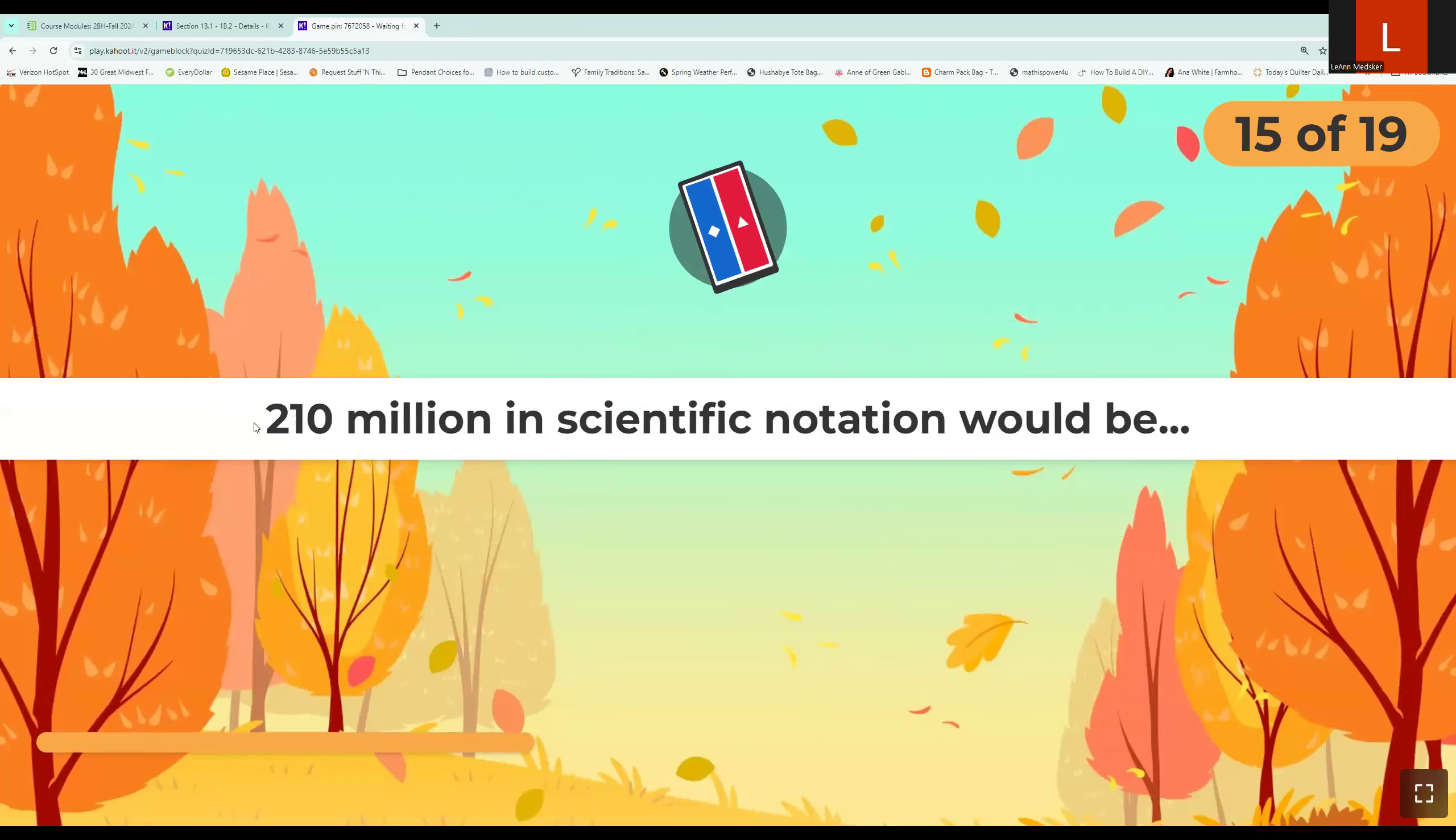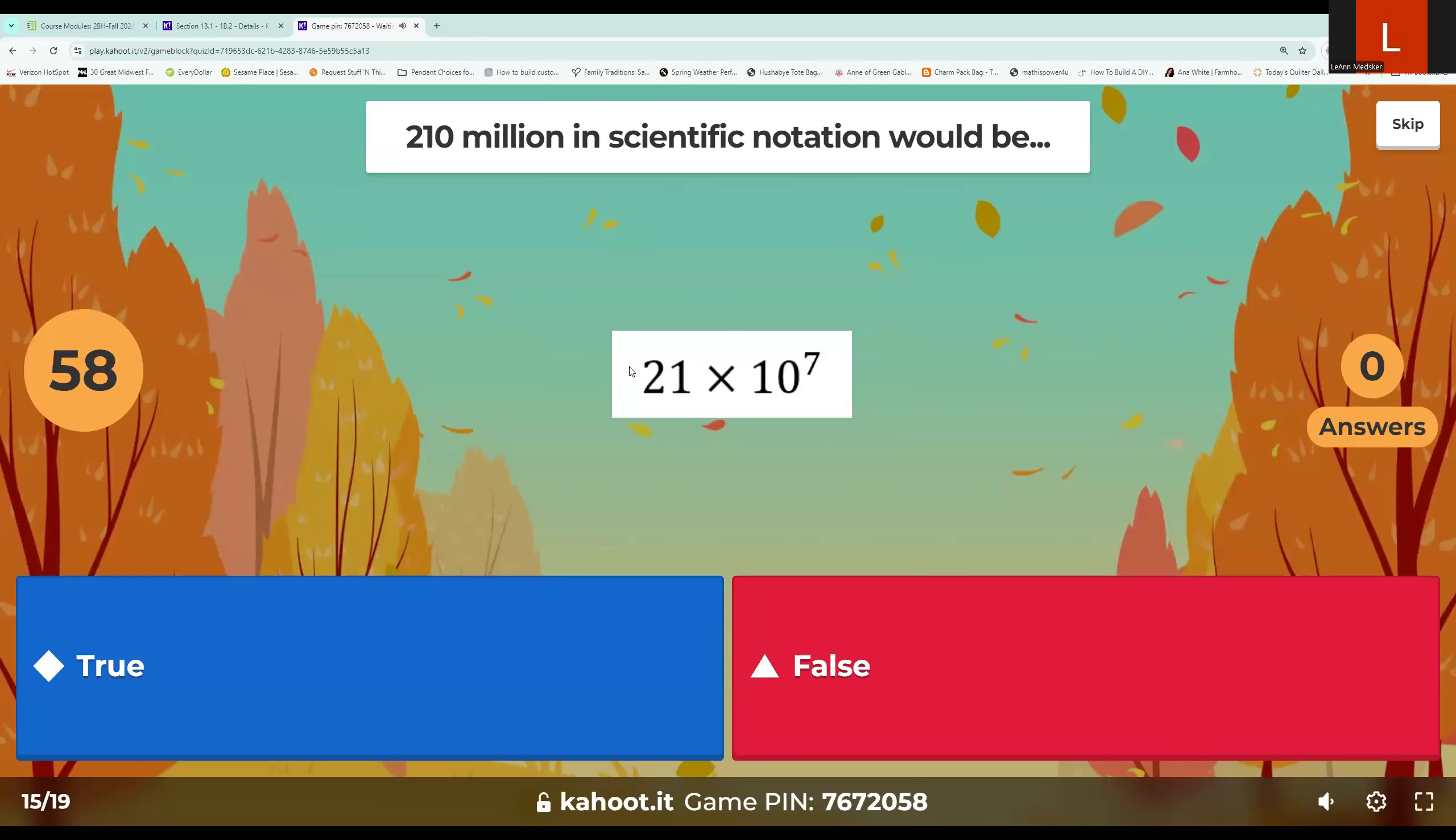True or false? Two hundred and ten million in scientific notation would be 21 times 10 to the 7th. Now, they said in scientific notation, so that means it has to be proper scientific notation. So that is not correct. I already know it's false, but let's see what it should have been. So two hundred and ten times million, remember we learned means 10 to the 6th. That's the original. The decimal point is currently here. We need one digit in front of the decimal. So we should be moving that to the left two places, which means we add 2 to our power. So this is false. It should have been 2.1 times 10 to the 8th.